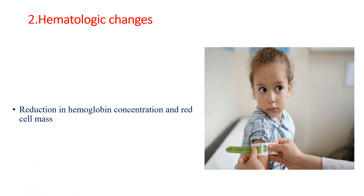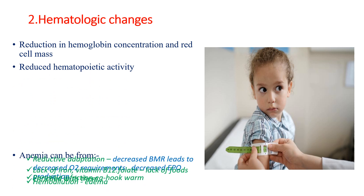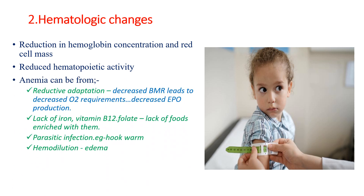The second is hematologic changes. During severe acute malnutrition, there is reduction in hemoglobin concentration, red cell mass, and reduced hematopoietic activity. Anemia in malnutrition can be due to reductive adaptation — during malnutrition, the decreased basal metabolic rate leads to decreased oxygen requirement, which leads to decreased erythropoietin production and decreased hemoglobin level. Also during malnutrition, there is lack of foods enriched with iron, B12, and folate, so nutritional anemia is common.